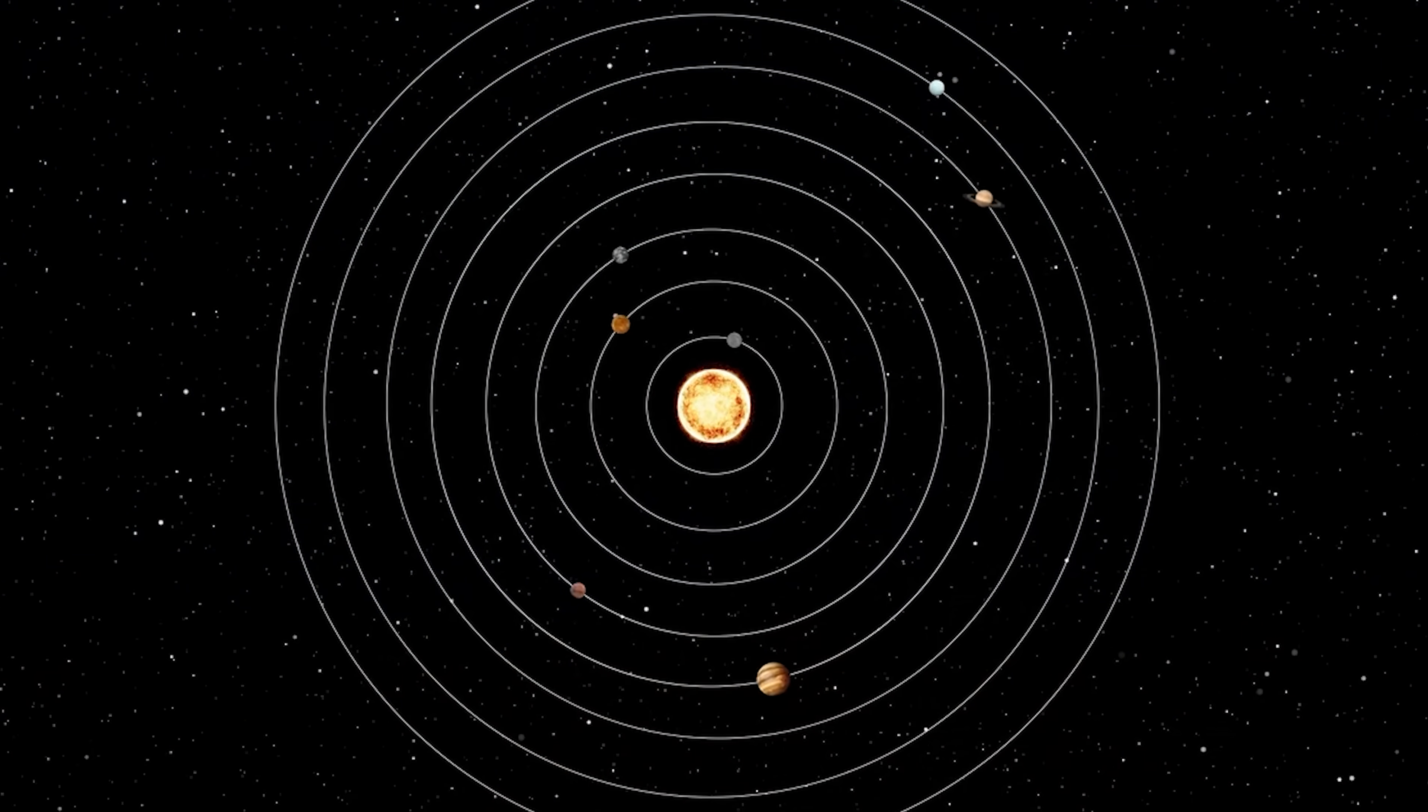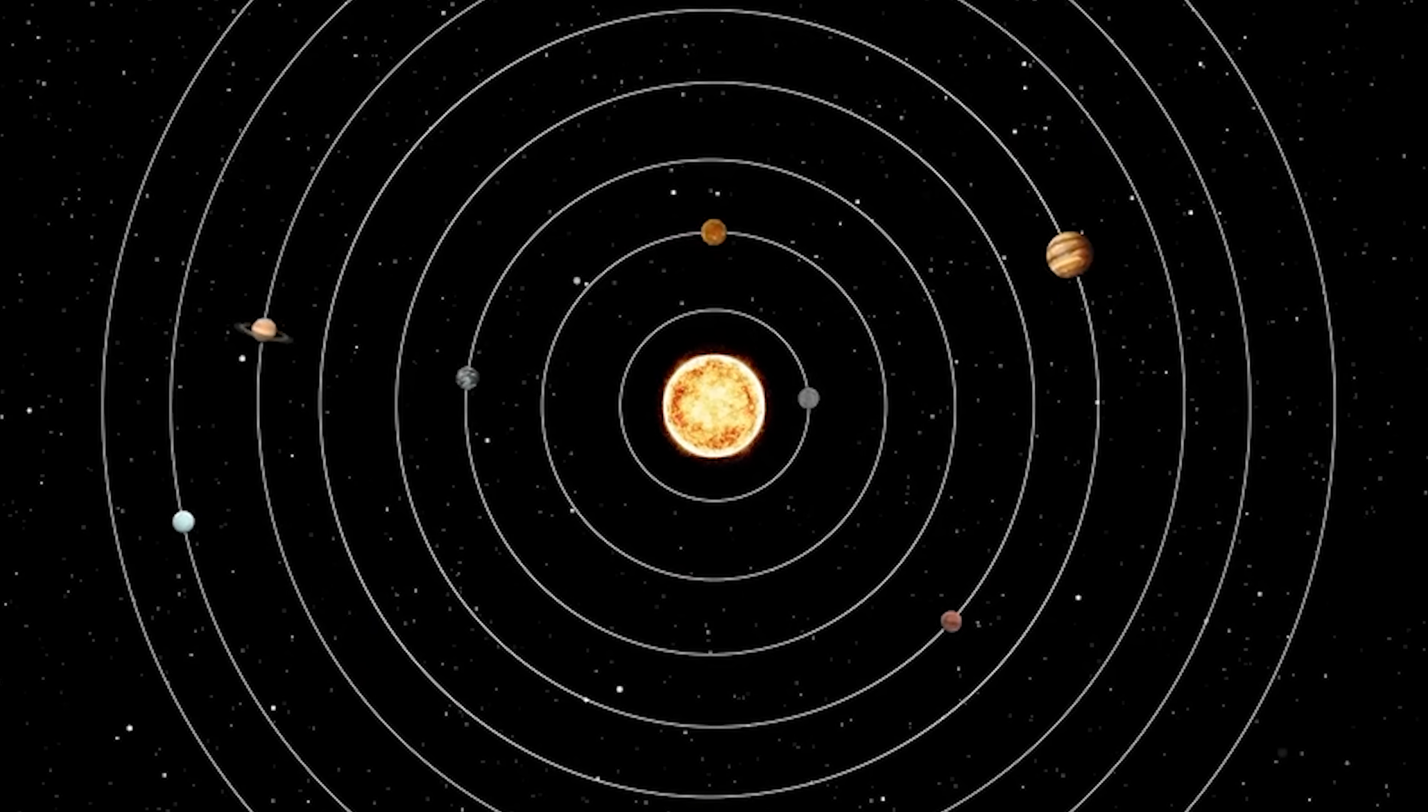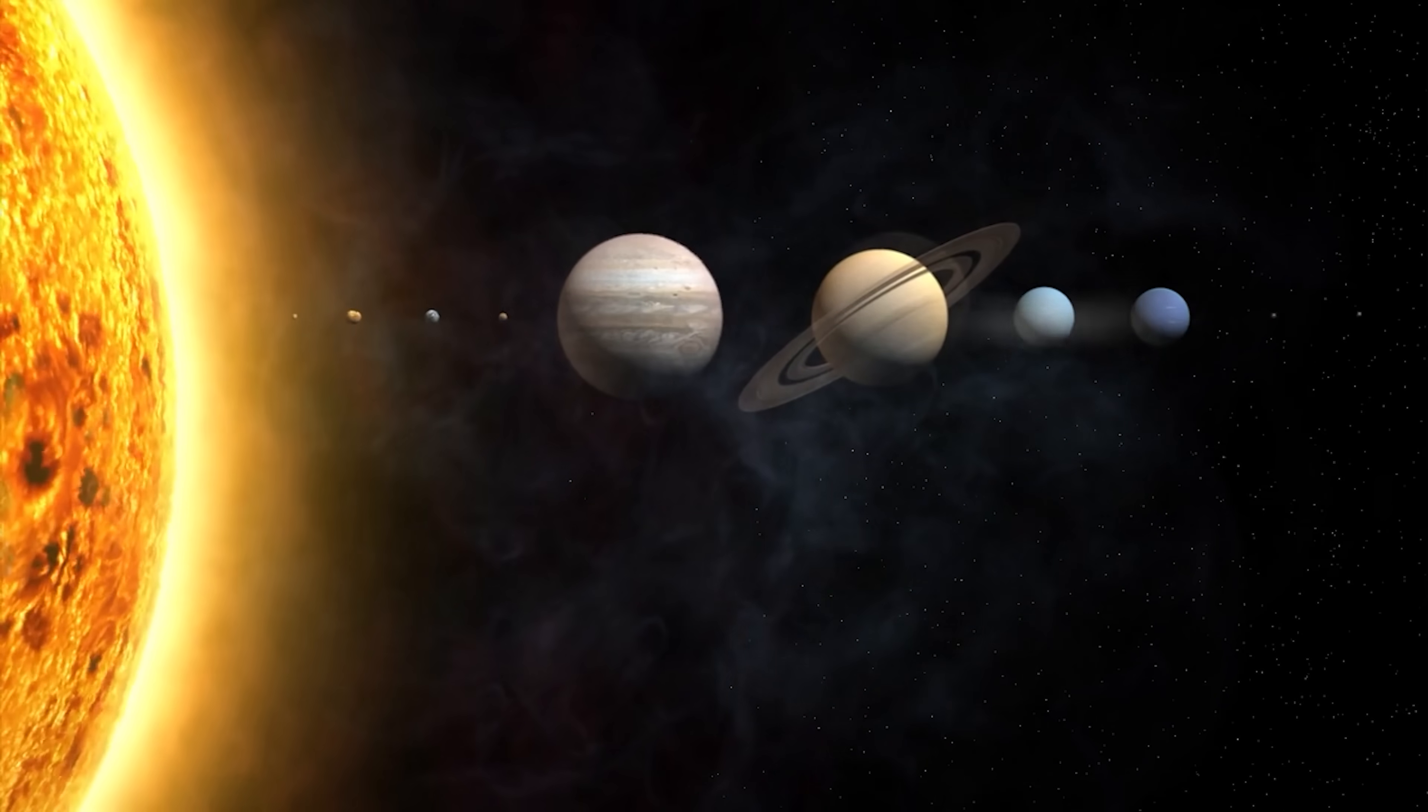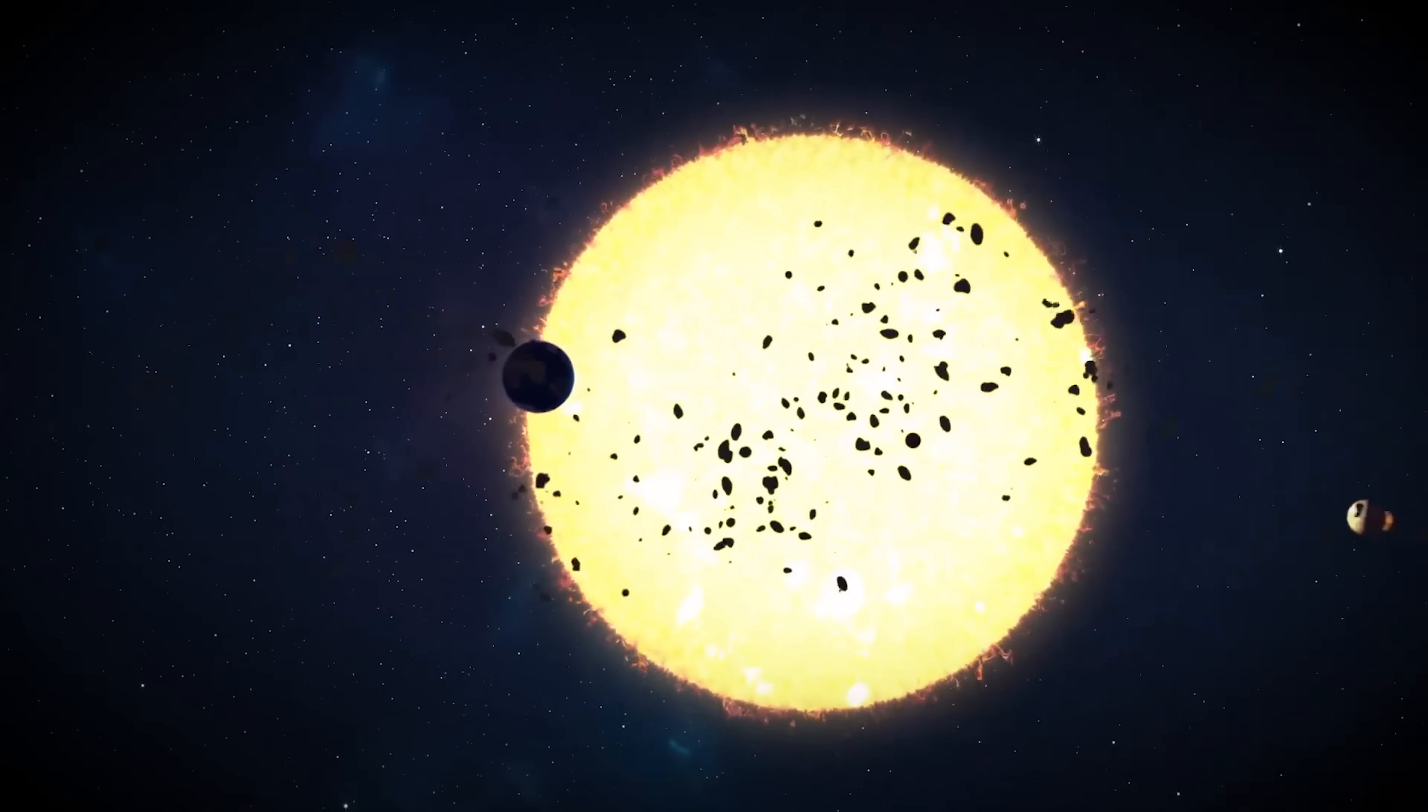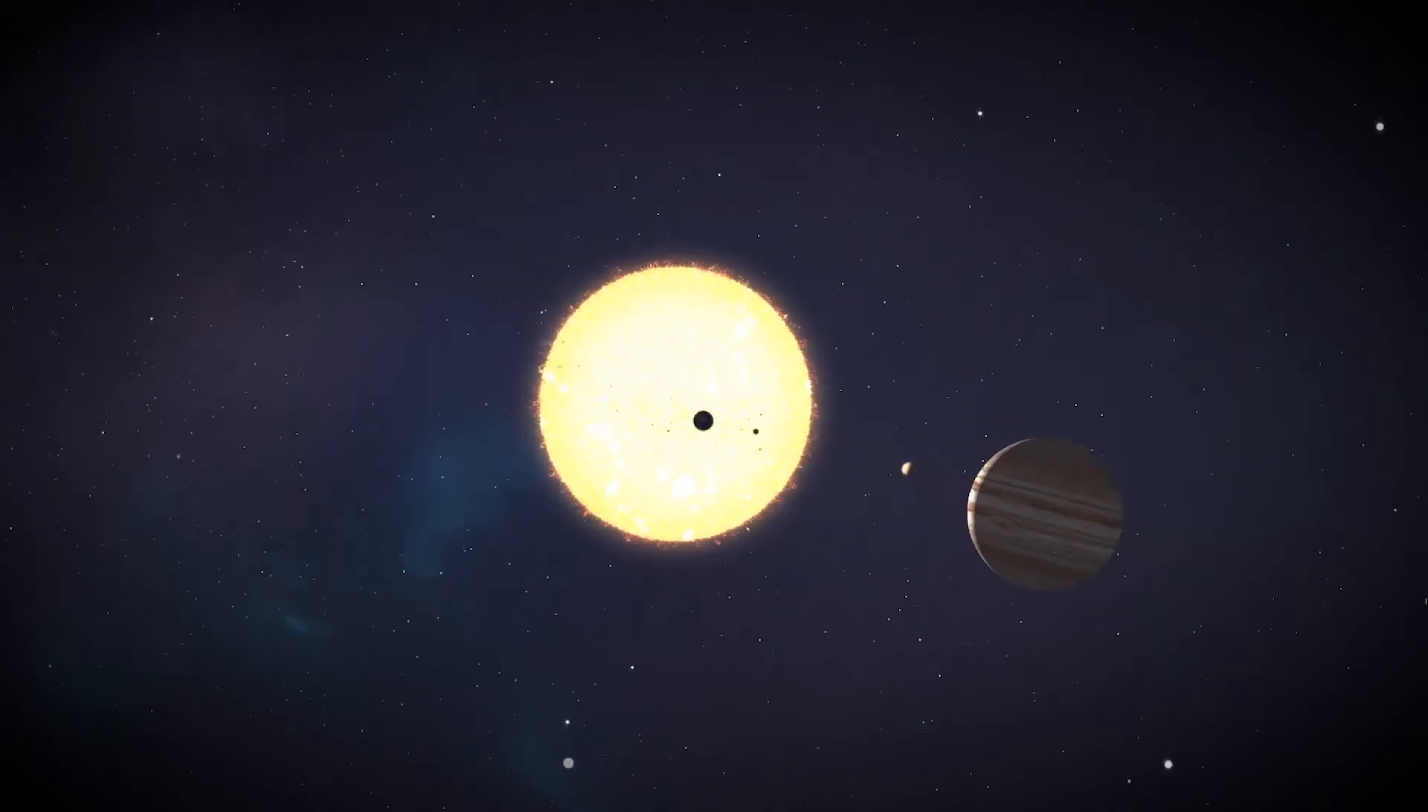In the coming months, 3I Atlas will gradually pass behind the sun, receding farther and eventually disappearing from view, returning to the cold void of interstellar space. By then, we will have collected a wealth of valuable data. Yet, as with Oumuamua, the object's true nature may continue to elude us for decades, or even centuries.